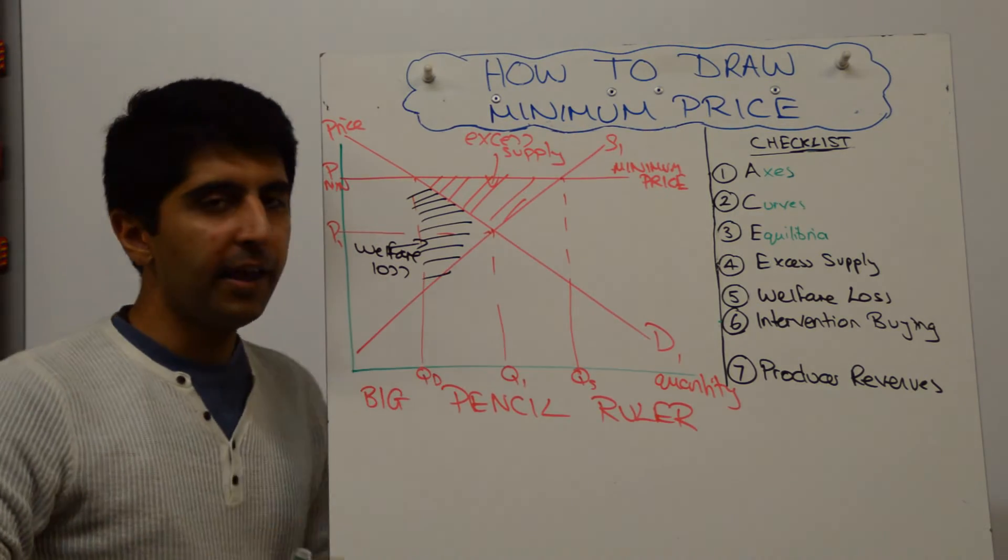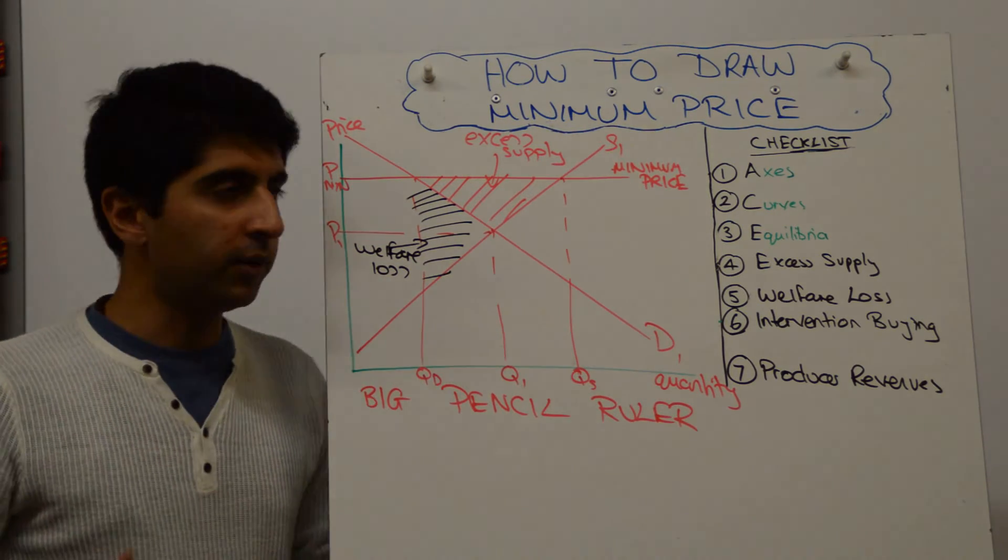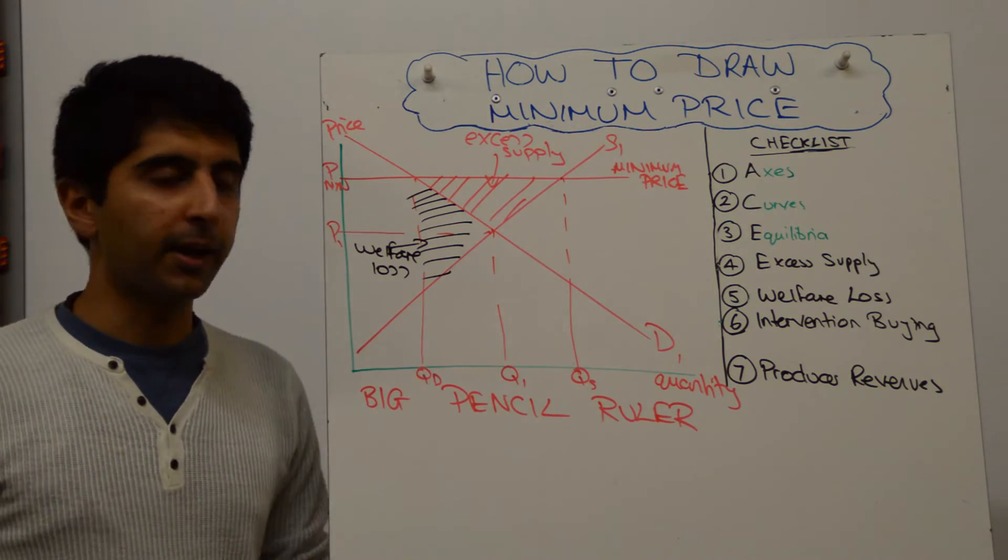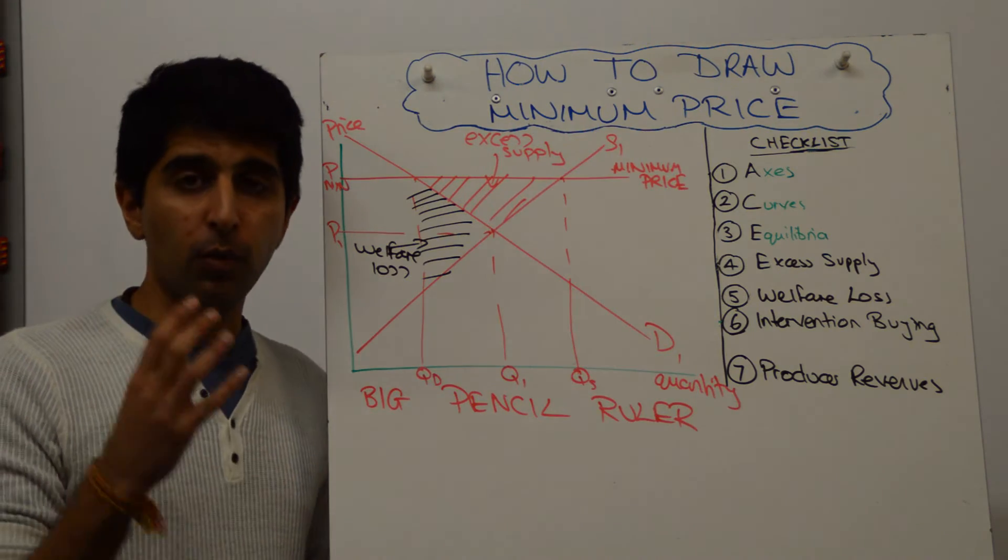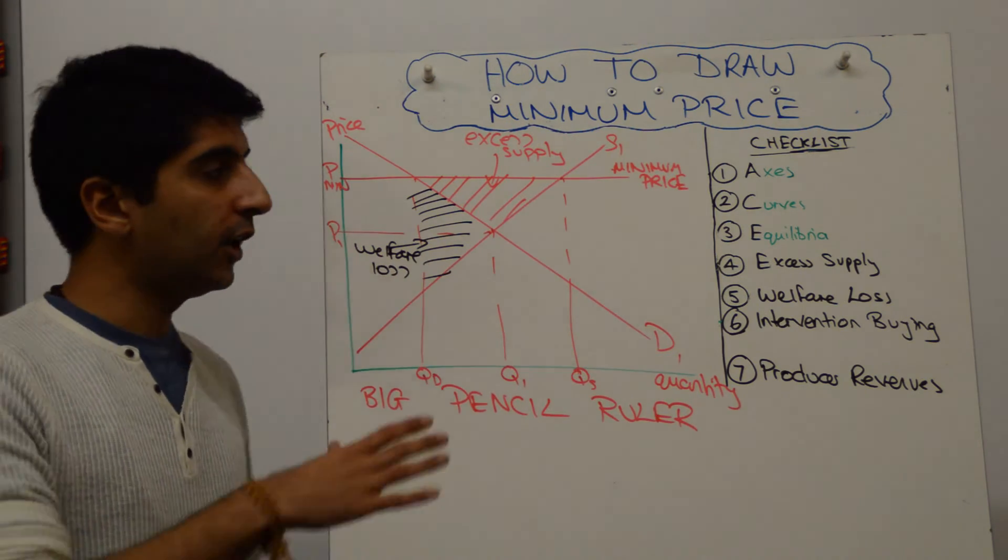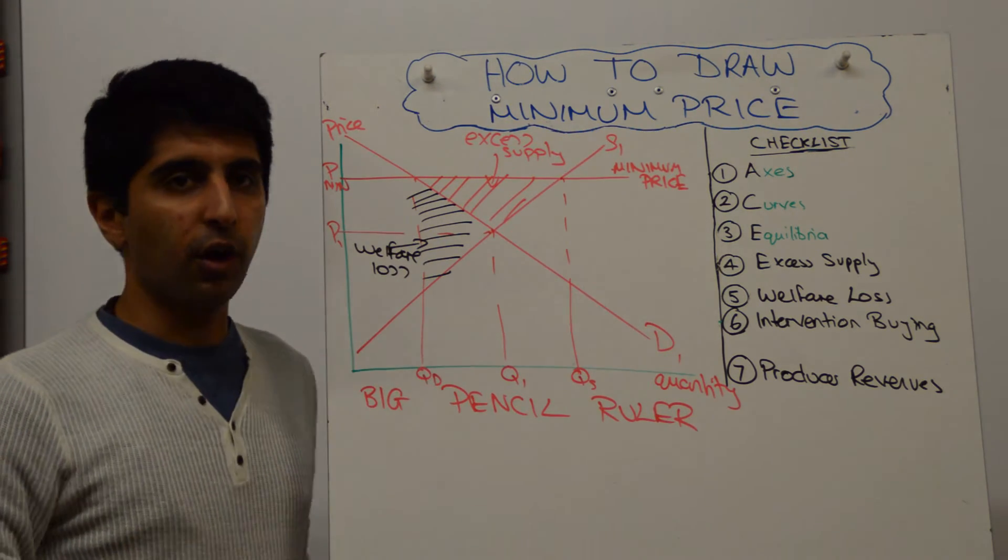Again, any time efficient equilibriums are messed around with, there is going to be a welfare loss in the market. Government intervention will always lead to a welfare loss, where there is a distortion of equilibrium.